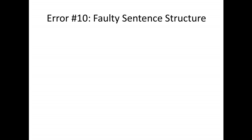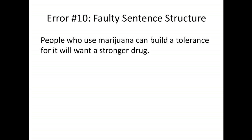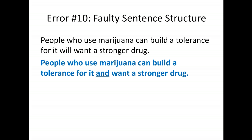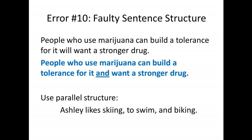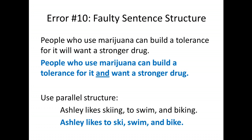Error ten is faulty sentence structure. 'People who use marijuana can build a tolerance for it will want a stronger drug' — it should be 'can build a tolerance for it and want a stronger drug'; we're missing the conjunction. Also, be sure to use parallel structure. 'Ashley likes skiing, to swim, and biking' is not parallel. It should be either 'Ashley likes to ski, swim, and bike,' or 'she likes skiing, swimming, and biking.' Pick one form — gerund or infinitive — and stick with it for all items. Don't switch back and forth.